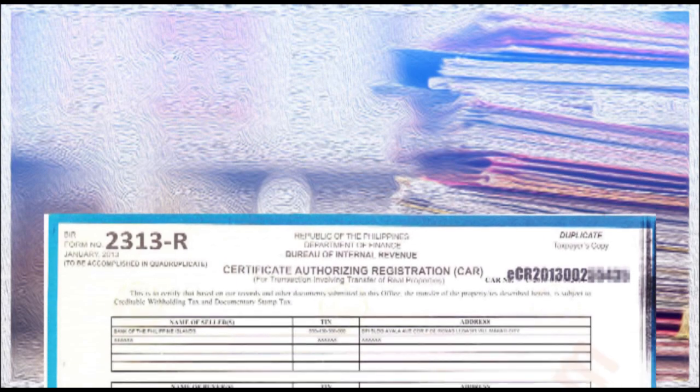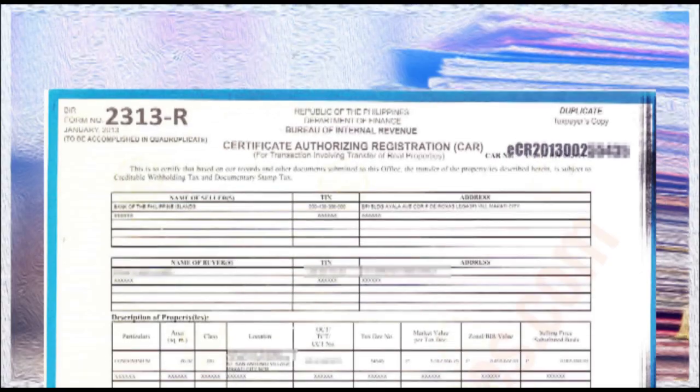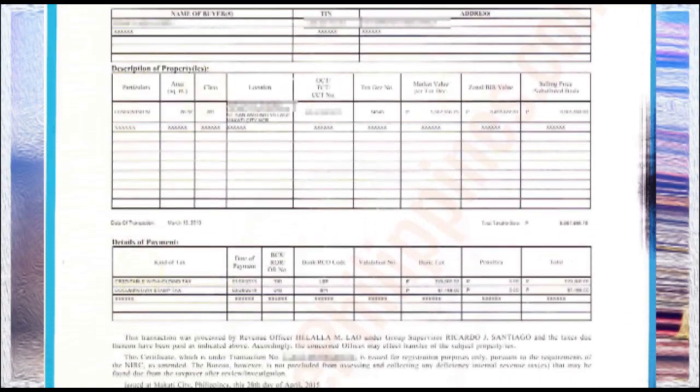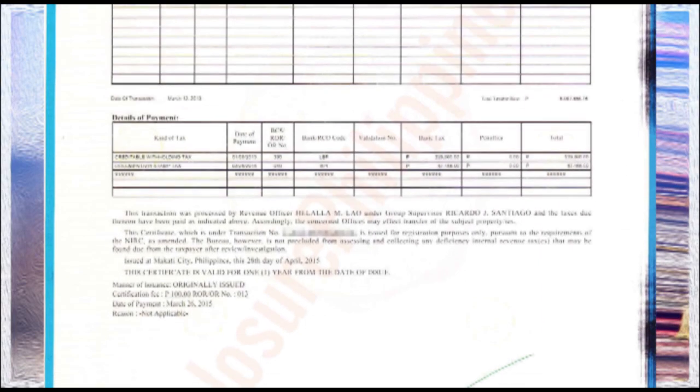Once you have received the Certificate Authorizing Registration or CAR from the BIR, you will be asked to photocopy the deed of absolute sale including the back page with the BIR stamp. Make at least 3 copies. Also, make a copy of the CAR, then return the photocopy to BIR.